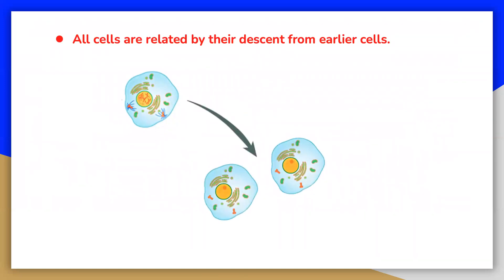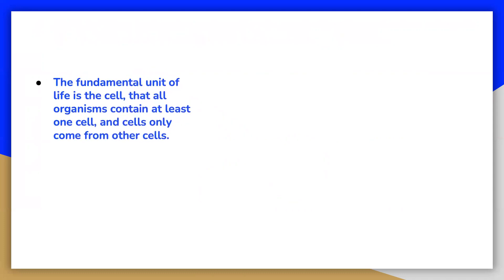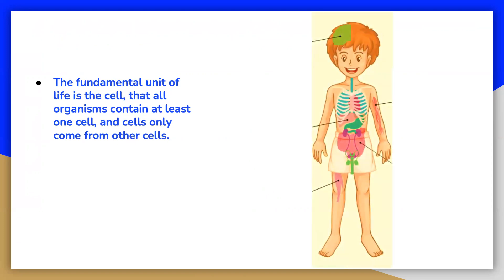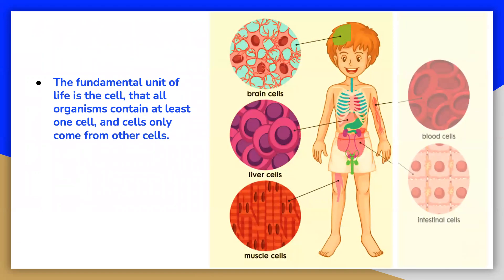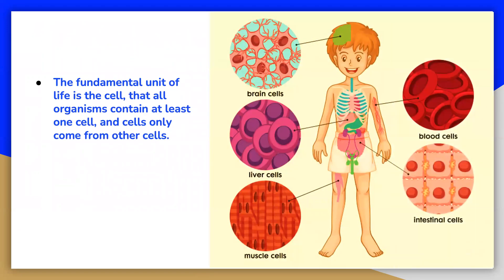It is the smallest form of life that can replicate on its own, but cells in our body differ quite a lot from one another. Despite sharing certain characteristics, cells may vary significantly in size, shape, structure, and function.